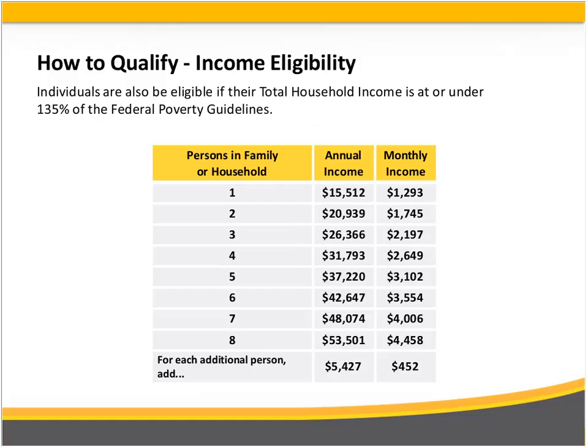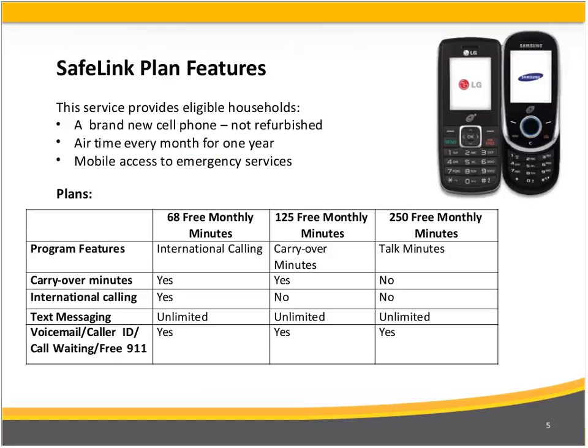SafeLink provides clients a brand-new cell phone — not refurbished. These are late model phones that are text messaging capable. Clients will get airtime each month for up to a year, and are eligible to requalify after that initial year if still eligible. There are three plans clients can choose from. By far the 250-minute plan is the most popular, and text messaging is unlimited, so individuals can text without it eating into their minutes, while still having 250 talk minutes if they choose that plan.